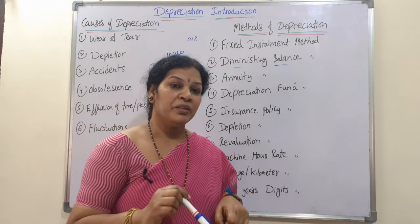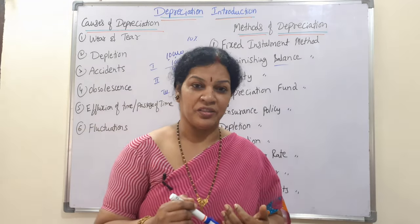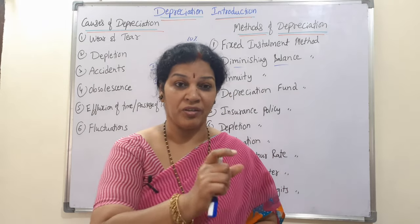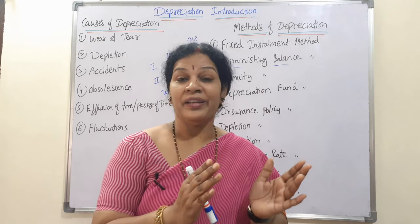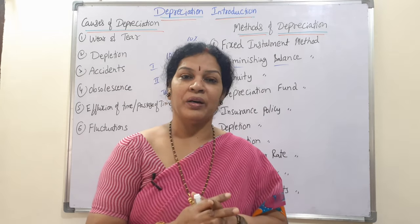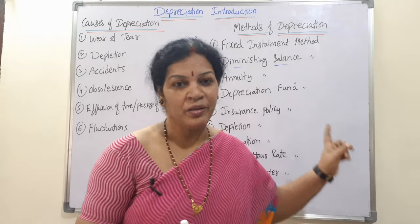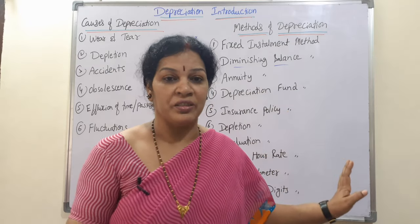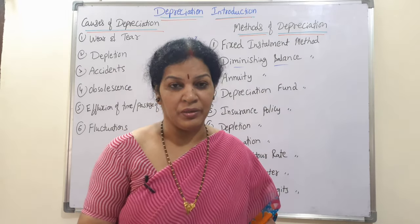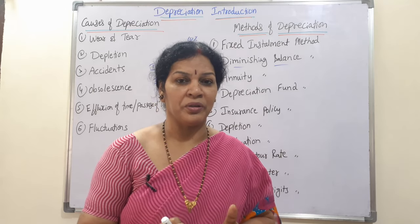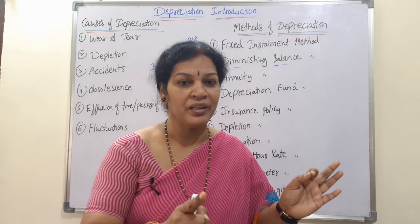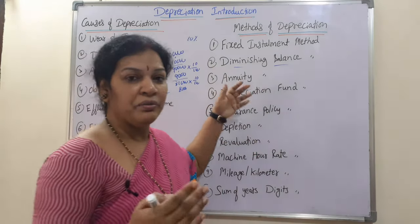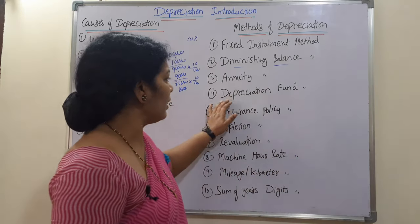The third method is the annuity method, which is generally used when an asset is taken on a lease basis. Annuity tables are referred to — for one rupee, the annuity value is taken based on the number of years and interest rate. Depreciation is calculated according to the annuity table value. Once calculated, the amount is fixed and the same depreciation is provided every year.